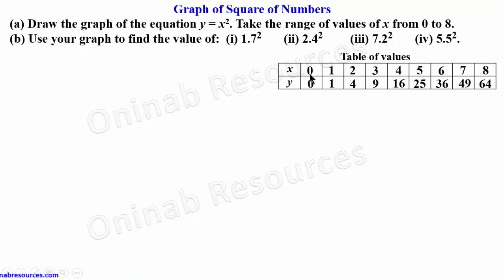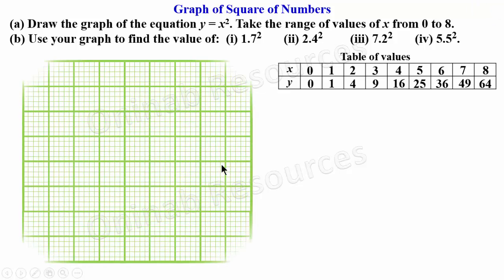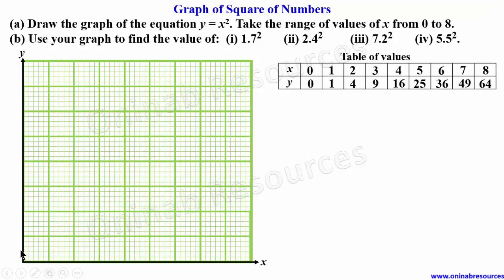We then go ahead to plot these points on our grid. Here is the x-axis and the y-axis. We have this place as the origin. On the x-axis we have 1, 2, 3, 4, 5, 6, 7, and 8. We then calibrate the y-axis as 10, 20, 30, 40, 50, 60, 70, and 80.